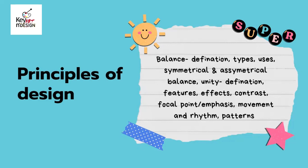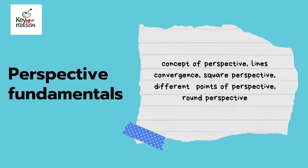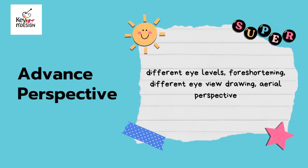Moving to principles of design: balance — definition, types, and uses, including symmetrical and asymmetrical balance. Unity — definition, features, and effects. Contrast, focal point, emphasis, movement and rhythm, and patterns.